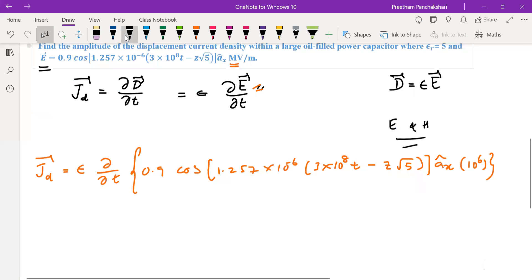Now we should go for the differentiation with respect to time. So ε, 0.9 is constant, take it out. Differentiate cos. Before differentiating cos, check whether cos contains the variable t. T is here. So we have to differentiate now.